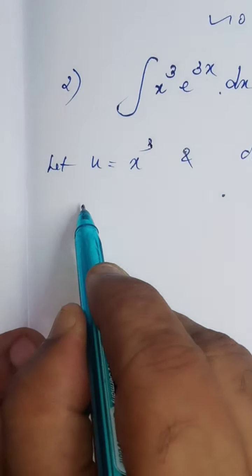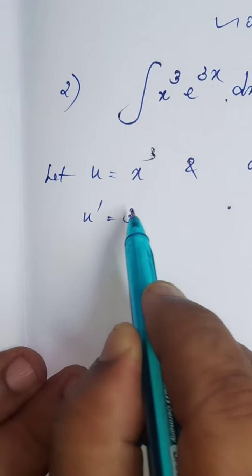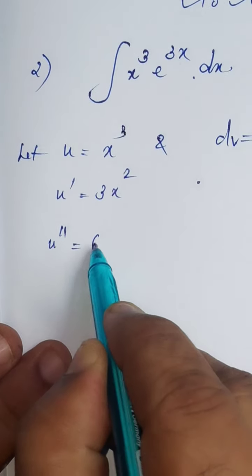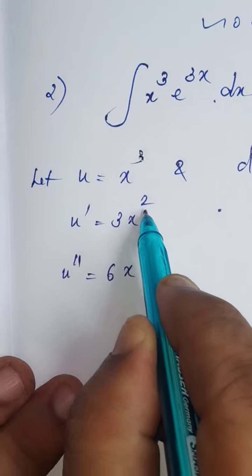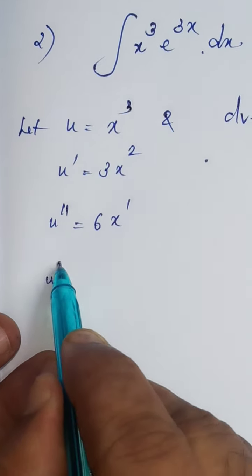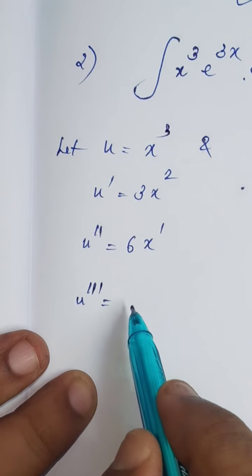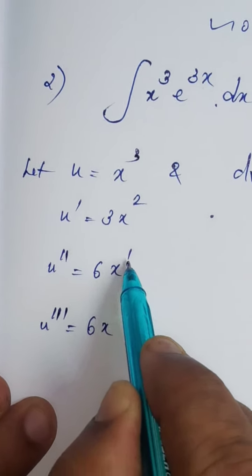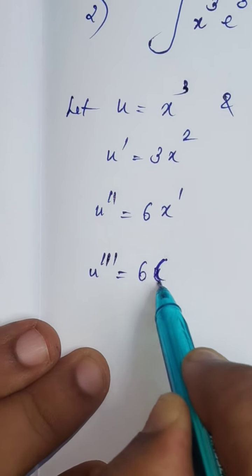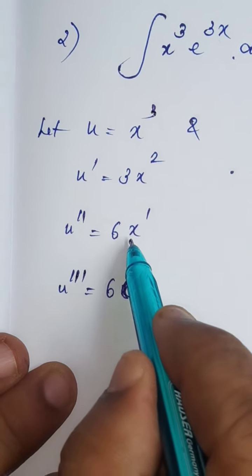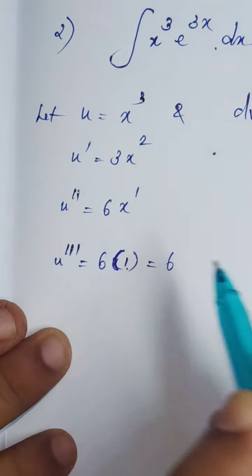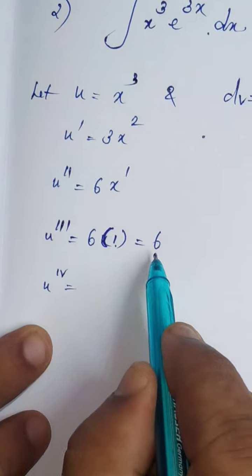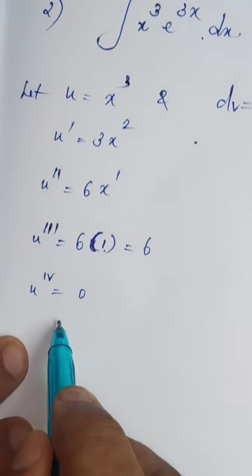Keep on differentiating u. u' = differentiation of x³ — write the power first, then reduce one in the power. u'' = 3·2 = 6x. Next, u''' = 6, since the x reduces to 1 and then differentiates to 1. Once again differentiate: u'''' = 0, since 6 is a pure constant and the differentiation of a constant is 0. After that, only 0 — just put etc.